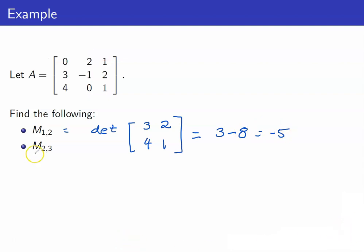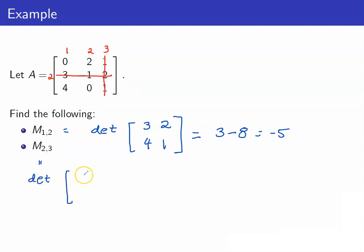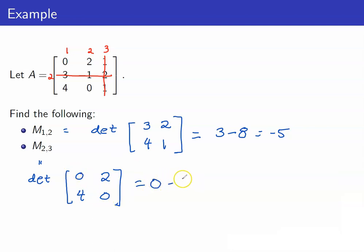Next let's compute M23. We remove the second row and the third column. This is equal to the determinant of the resulting 2x2 matrix, which is 0, 2, 4, 0. So this determinant is equal to 0 minus 8, which equals negative 8.